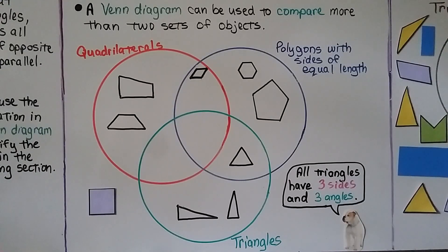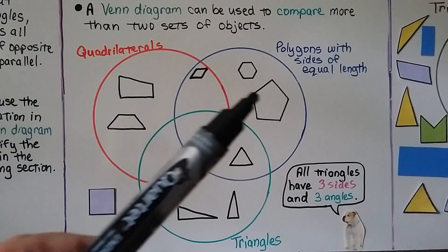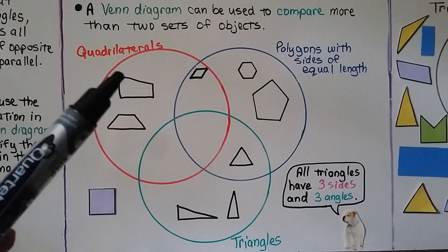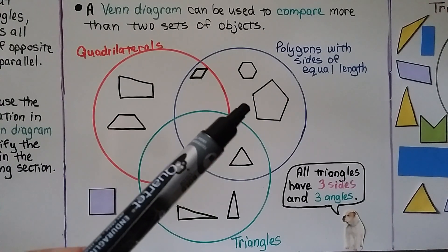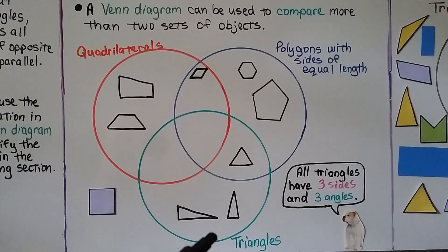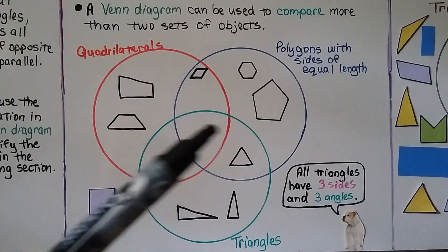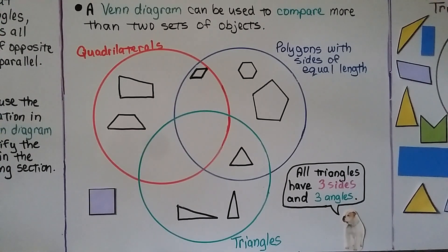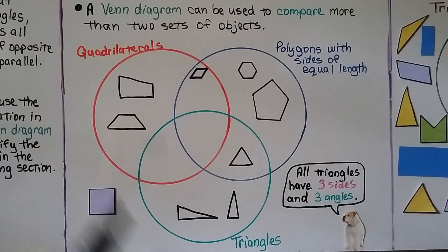A Venn Diagram can be used to compare more than two sets of objects. Here we're comparing three sets of objects. The red circle contains quadrilaterals, the blue circle is polygons with sides of equal length, and the green circle contains triangles. Where they overlap, they would share those traits. Remember, quadrilaterals have four sides and four angles, and triangles have three sides and three angles.